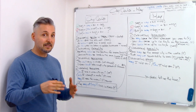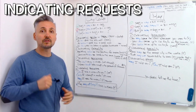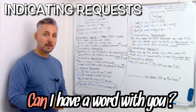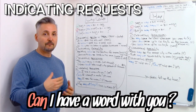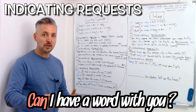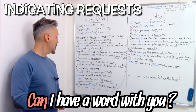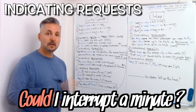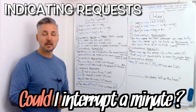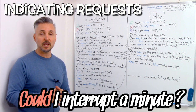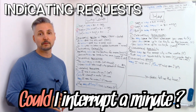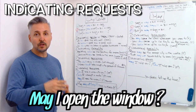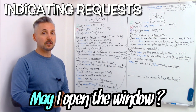The last usage is to indicate requests. Can I have a word with you? — in a very informal situation. Could I interrupt a minute? — this would be a formal situation, for example at a business meeting. Or you could even use may: may I open the window, in a formal situation.